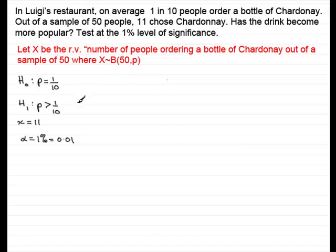So, we're going to reject Ho, and I'd always strongly advise you to write this in most questions. We're going to reject Ho if the probability that the number of people choosing a bottle of Chardonnay being greater than or equal to the observed value, which in this case is eleven, given that Ho is true. And if Ho is true, we know that x is distributed binomially, where we've got fifty people, and the probability of someone choosing a bottle of Chardonnay is one tenth.